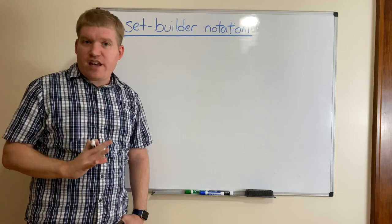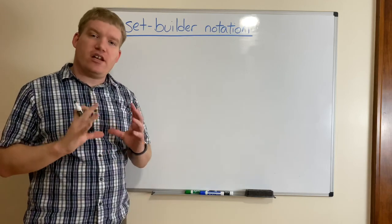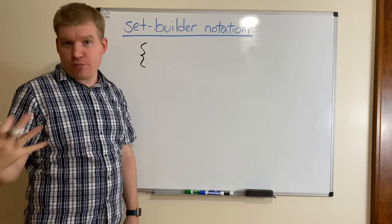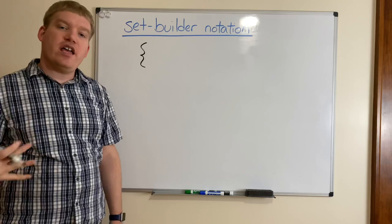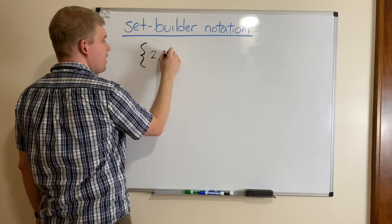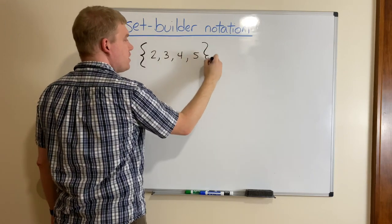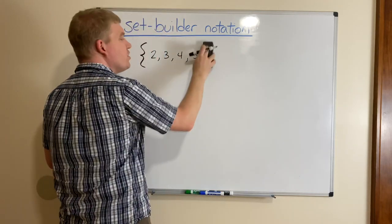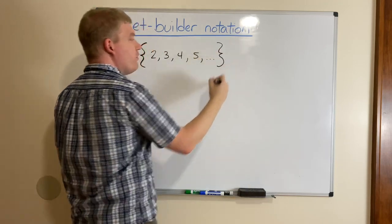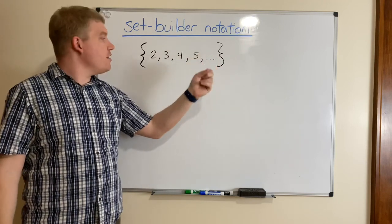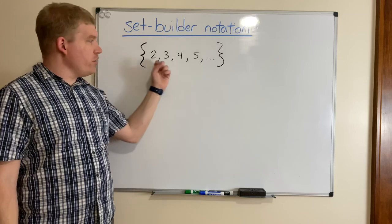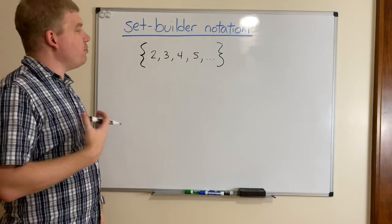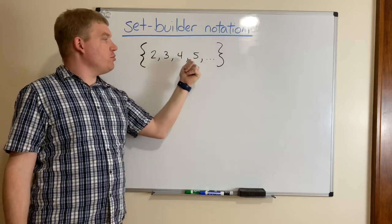Now let's talk about what a set of numbers looks like when we write it out. We use braces — not brackets — and whenever we put a list of numbers inside braces, that represents a set. Some sets are finite: {2, 3, 4, 5} has only four numbers. More interesting are infinite sets — when you see an ellipsis, those three dots, that means the set continues forever and ever. There are an infinite number of numbers in that set.